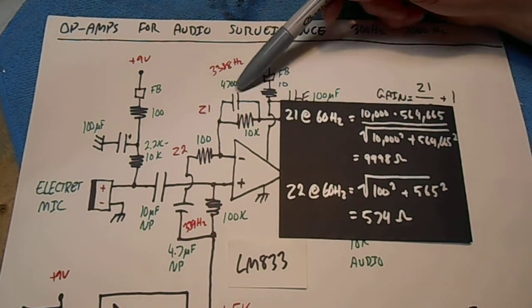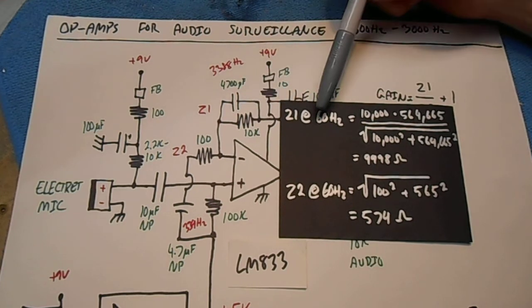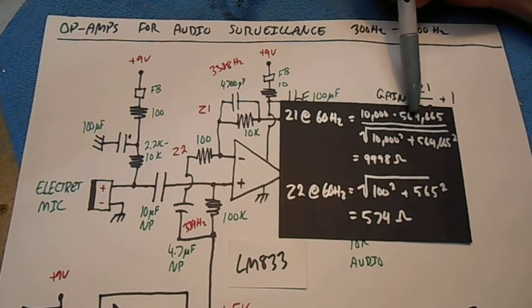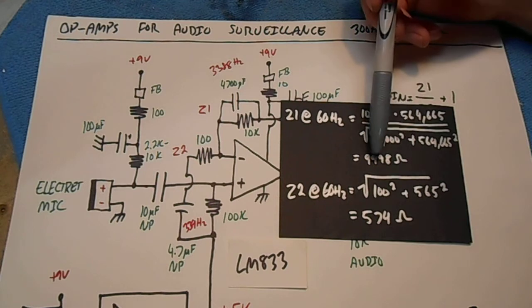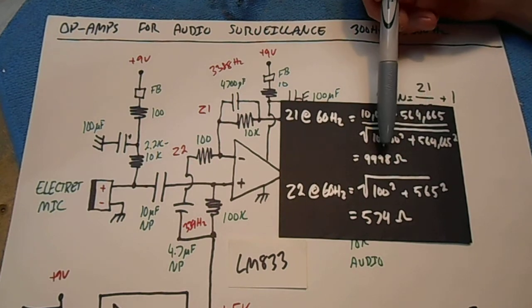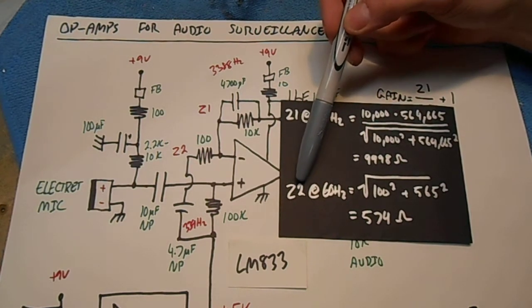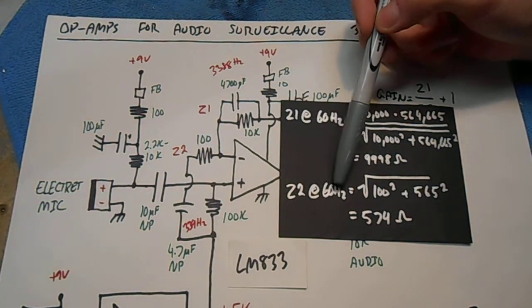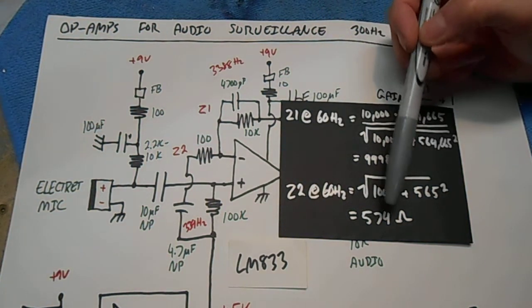We want to determine the impedance of our feedback network at 60 hertz. We plug that into the previous equation. The voltage gain comes out to 9,998 ohms. And for our input element network, our Z2 in this case, at 60 hertz, comes out to 574 ohms.